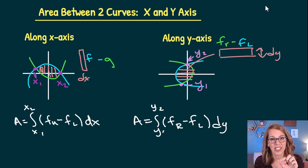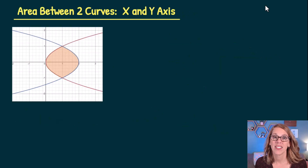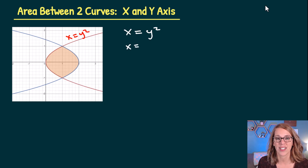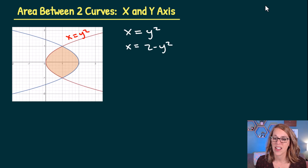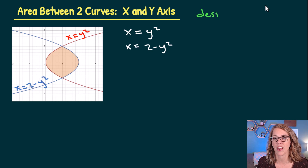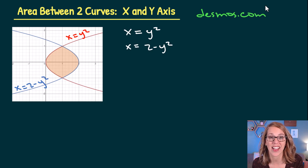We're going to do an example of each. Let's start with one along the y-axis. In this example, we're looking for the area between two curves: x equals y squared (the red one) and x equals 2 minus y squared (the blue one). I went ahead and graphed these in Desmos — www.desmos.com. It's always a great idea to get a picture of what your functions look like and what the area looks like before you put these together.